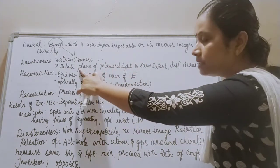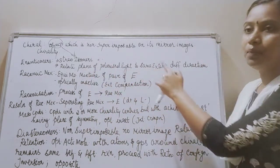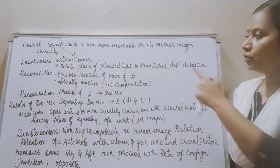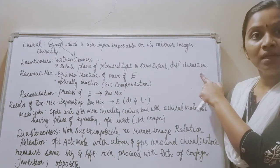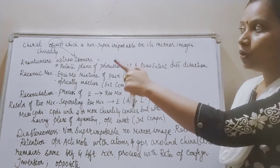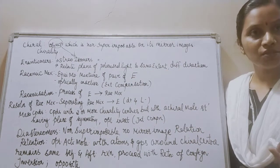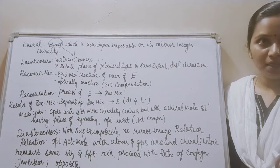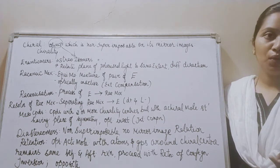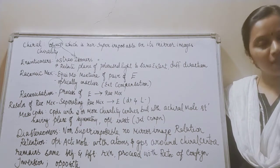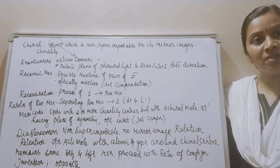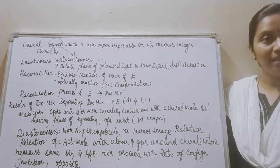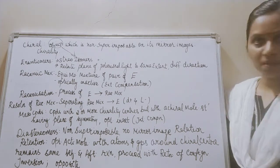Enantiomers are able to rotate plane polarized light to the same extent, but the direction of rotation is different — they rotate in different directions. Enantiomers rotate the plane polarized light to the same extent as that of stereoisomers, but enantiomers will be rotating the plane polarized light in the direction opposite to that of stereoisomers.